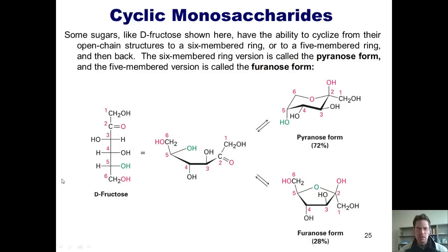Some sugars, like D-fructose shown here, have the ability to cyclize from their open chain forms to a six-membered ring or to a five-membered ring and then back. So as I mentioned before, the six-membered ring is called a pyranose form and the five-membered ring is called a furanose form.